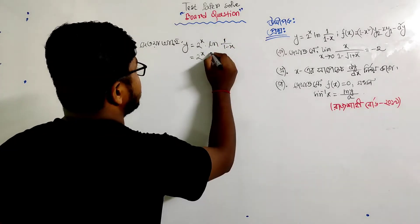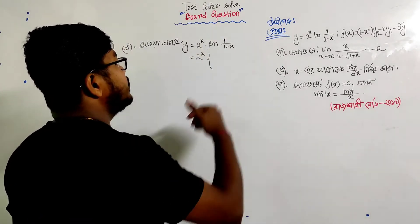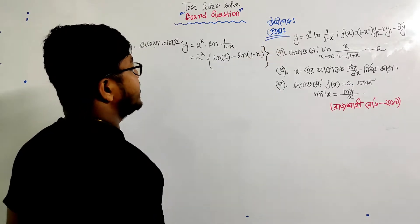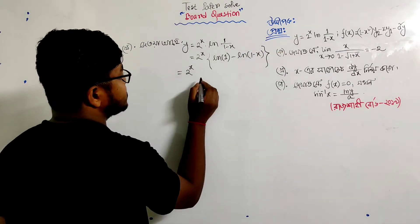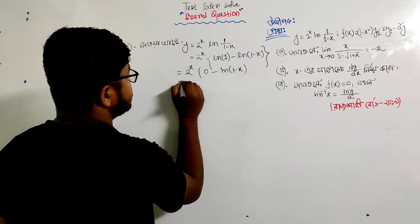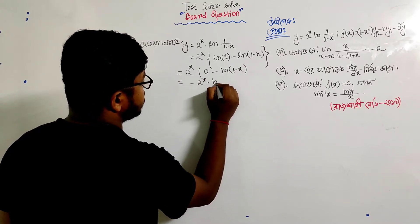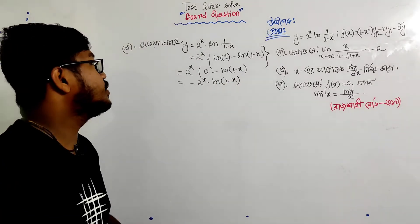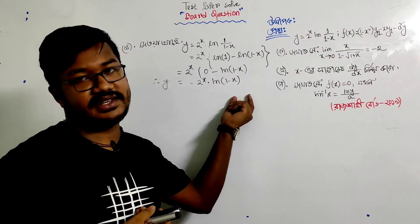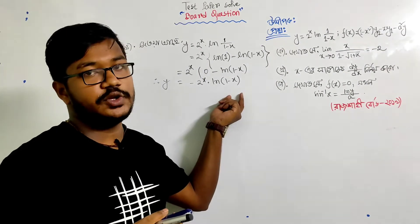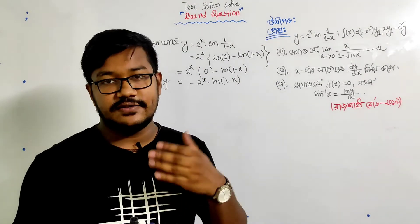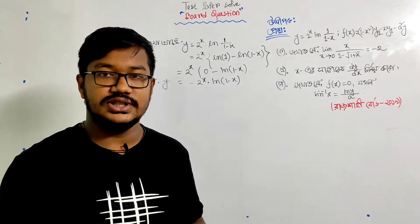This is ln of 1 minus ln of 1 minus x. So ln of 1 by 1 minus x becomes 0 minus ln of 1 minus x, which equals minus ln of 1 minus x. So y equals minus 2 to the power x into ln of 1 minus x. We will now differentiate this function ln of 1 minus x.